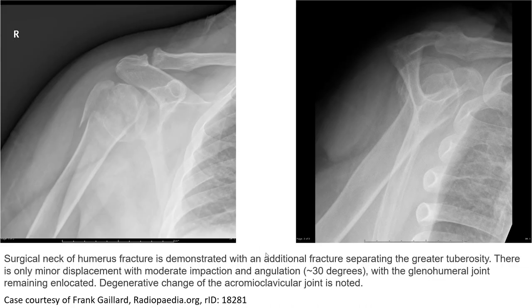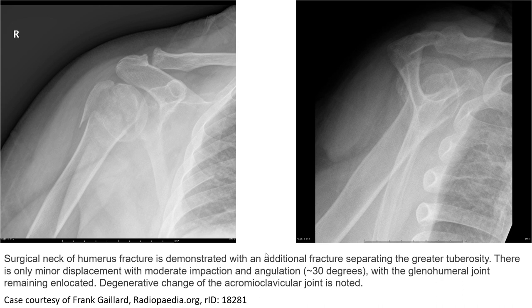Another example, also a surgical neck of humerus fracture, which is demonstrated with an additional fracture separating the greater tuberosity. There is only minor displacement with moderate impaction and angulation, with the glenohumeral joint remaining located. Degenerative change of the acromioclavicular joint is noted.